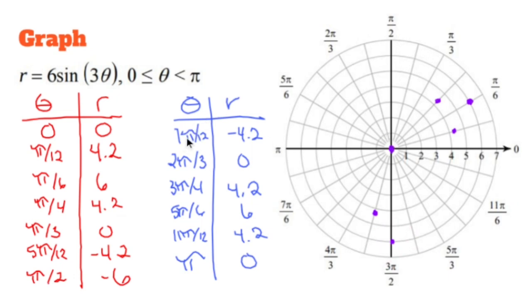Here we are on this one. 7 pi over 2 is going to be negative 4.2. So that guy right there. 3 quarters of a pi over 4 is, oh, I forgot one. 2 pi over 3 is going to be 0. So that one right there.